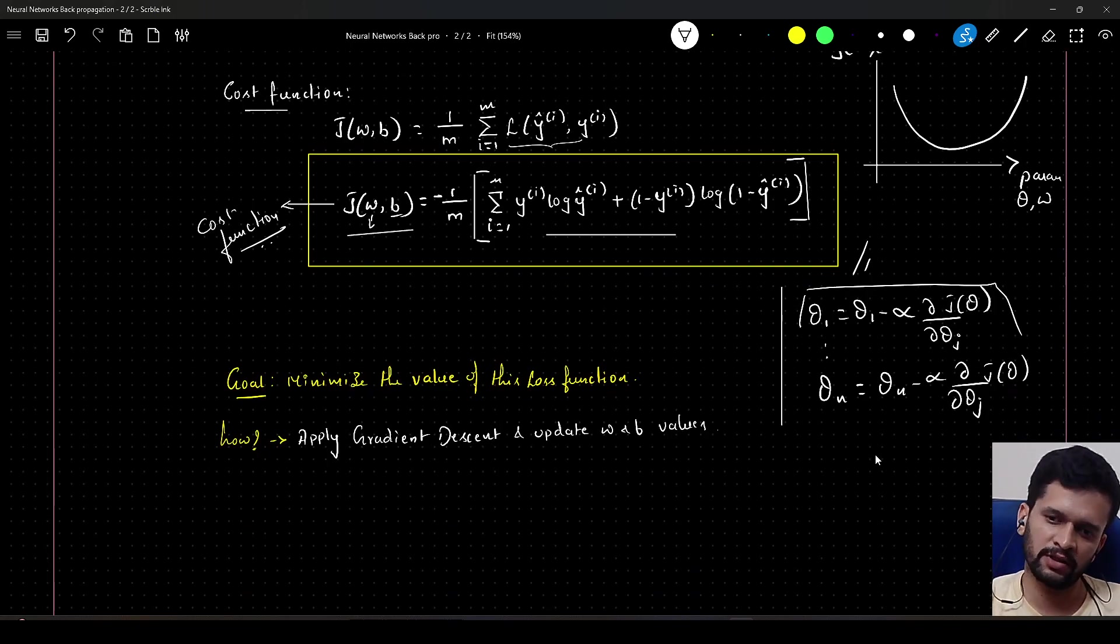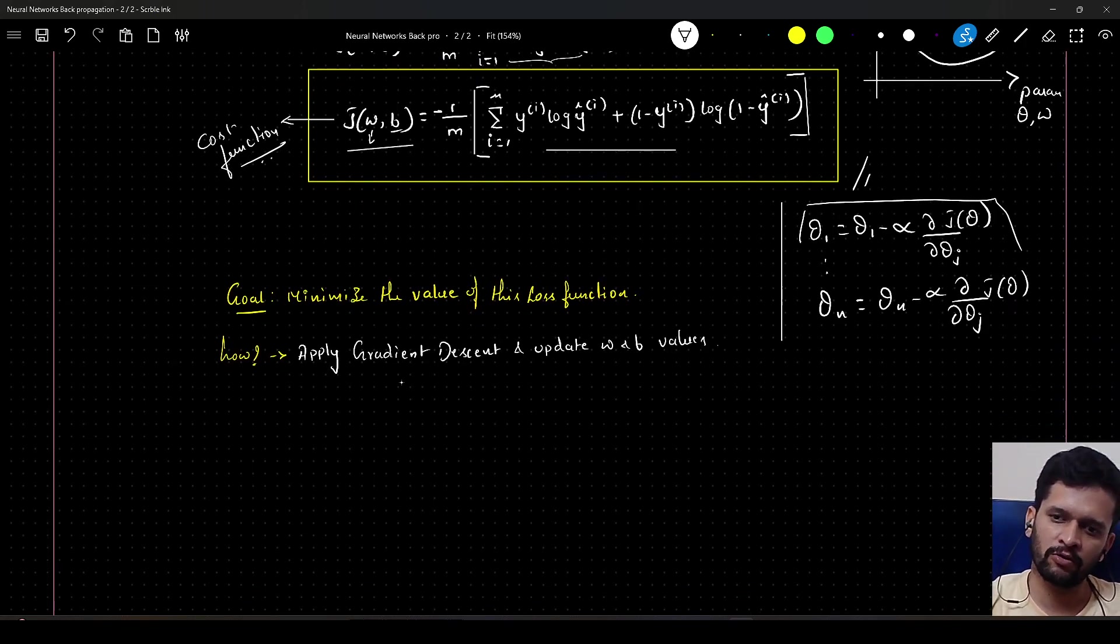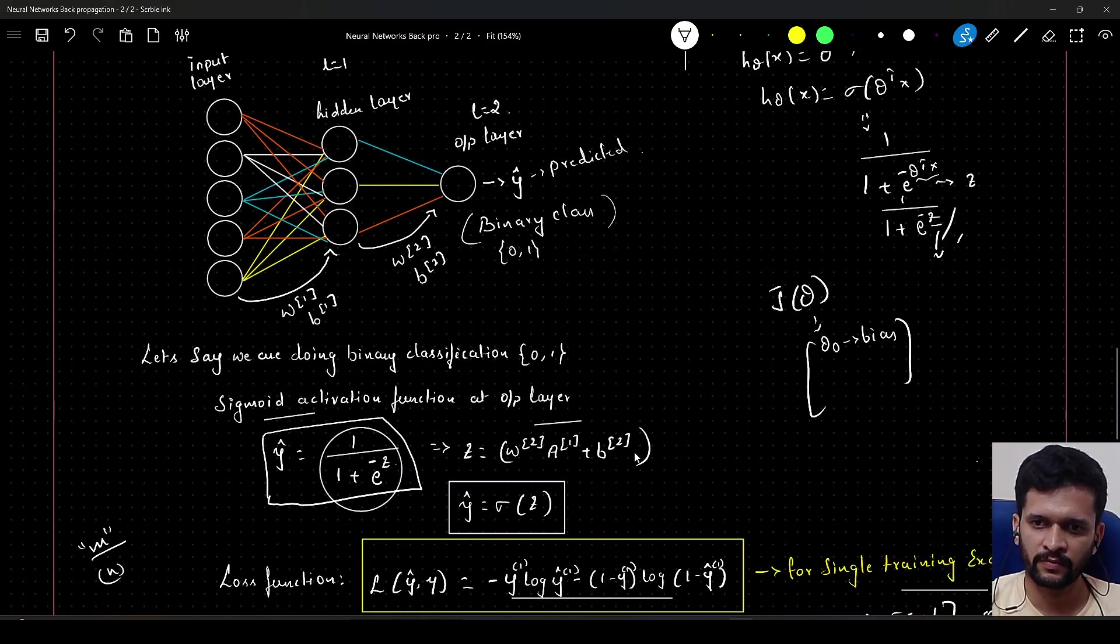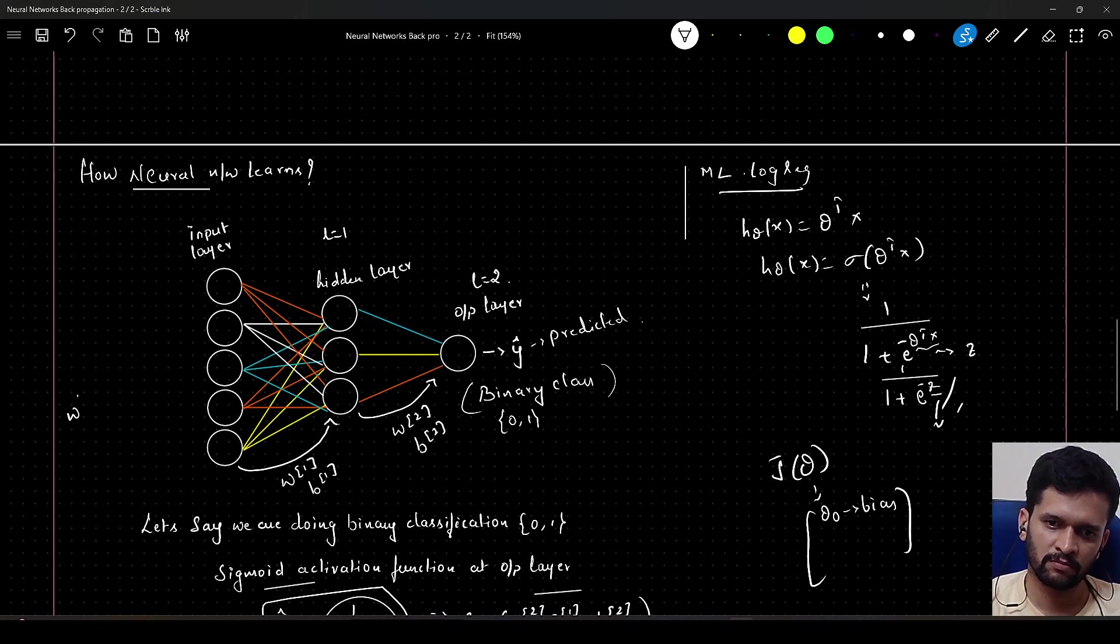But in case of neural networks, we have to update our w's at each layer and we have to update our b's at each layer. In this case, what will be the shape of w1? The shape of w1 will be 3 by 5. And bias 1, it will be just a single number.